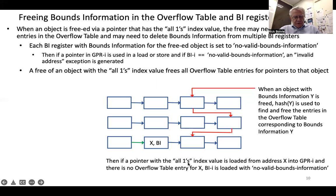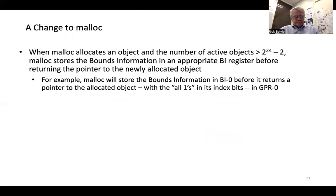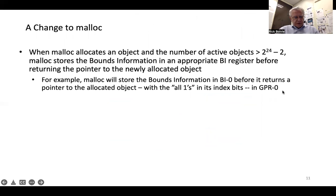All those entries will be freed, as well as the entries in the bounds information registers. Later, if a pointer with the all-ones index value is loaded from address X into GPR i and there is no overflow table entry for X, BI i is loaded with no valid bounds information. We also make a change to malloc: when malloc allocates an object and the number of active objects is greater than 2^24 minus 2, malloc stores the bounds information in the appropriate BI register before returning the pointer, stores the all-ones value in the index bits.